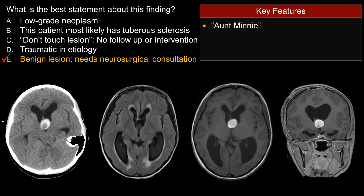Let's look at some of the key features about this lesion. This is an Aunt Minnie. For those of you who have seen this lesion before, you probably recognize this right away — you don't have to think about it too much. It's important to recognize an Aunt Minnie on a board exam because it's basically a free point for you. But it's equally important to recognize an Aunt Minnie in real life so you don't give an unnecessarily long differential diagnosis.